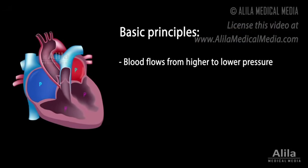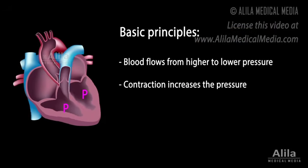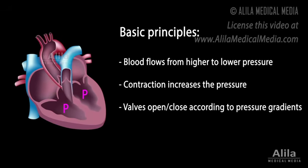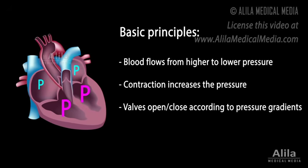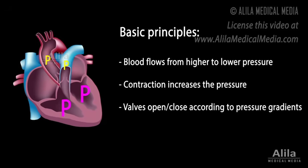Reminders: Blood flows from higher to lower pressure. Contraction increases the pressure within a chamber, while relaxation lowers the pressure. AV valves open when atrial pressures are higher than ventricular pressures and close when the pressure gradient is reversed. Similarly, semilunar valves open when ventricular pressures are higher than aortic and pulmonary pressures and close when the reverse is true.